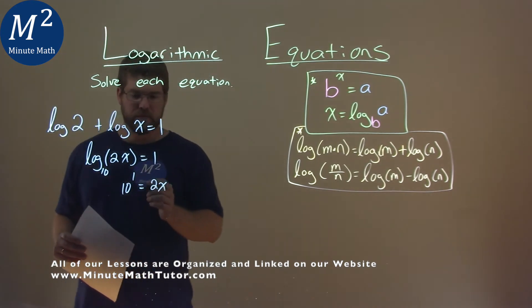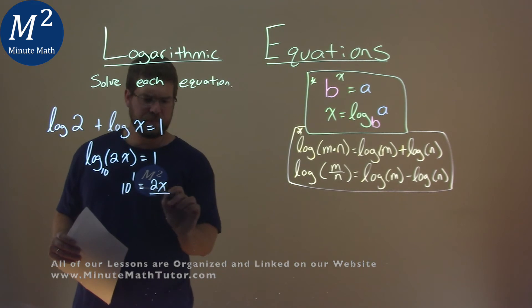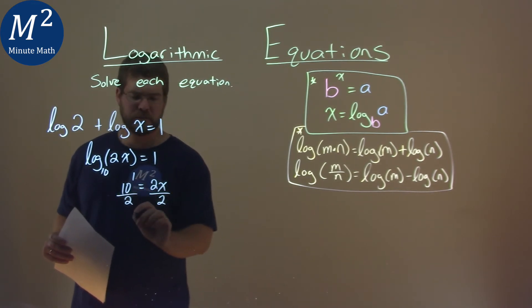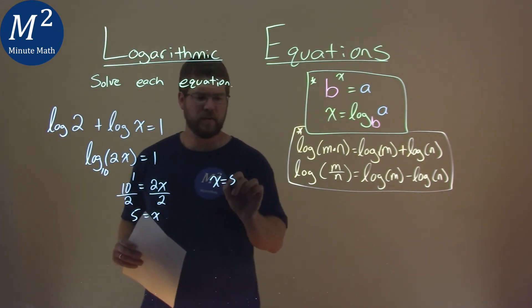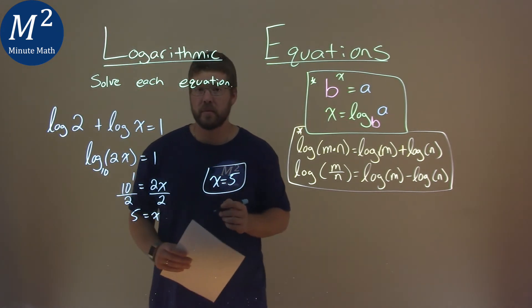Well, luckily for us, 10 to the first power is just 10. I divide both sides by 2, and 10 divided by 2 is 5. And so, pretty easily, my final answer here is x equals 5.